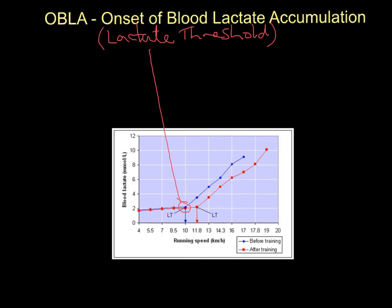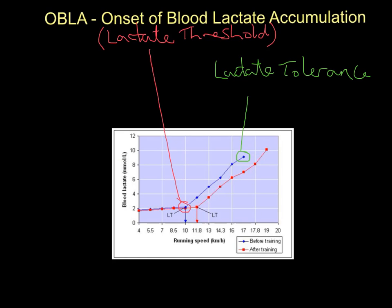This athlete before training reached OBLA at 10 km per hour. There's another important point on the graph — the top end — which is called lactate tolerance, not lactate threshold. Lactate tolerance is how much lactic acid they could cope with in their blood before having to stop. The graph stops rising because they couldn't work any harder. Reading across, that's around 9 millimoles per litre — their lactate tolerance.